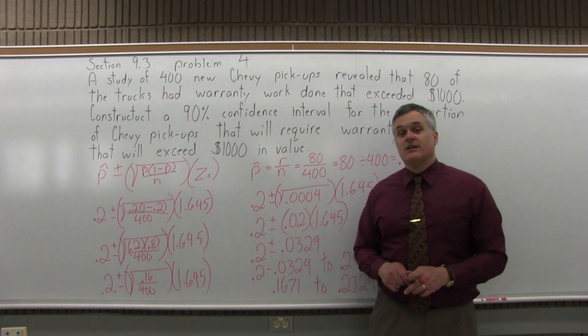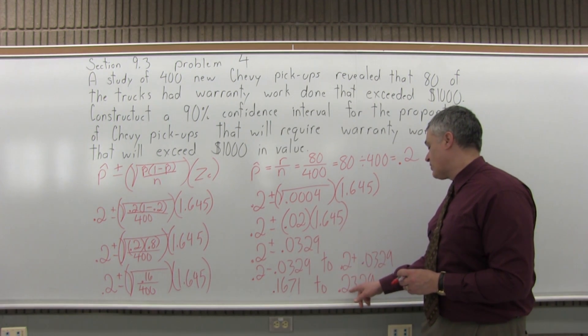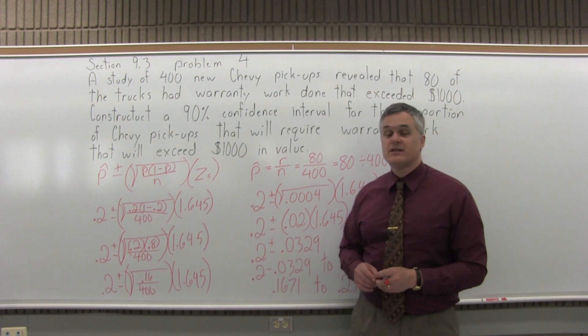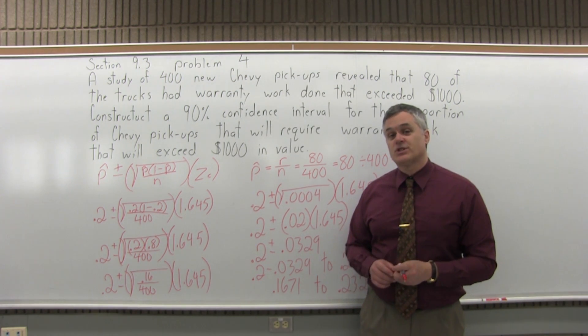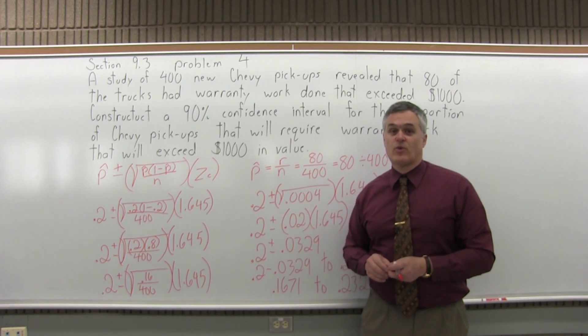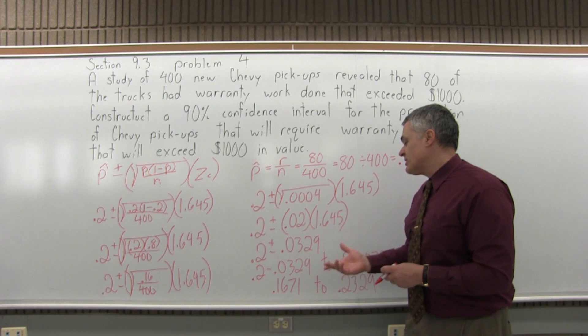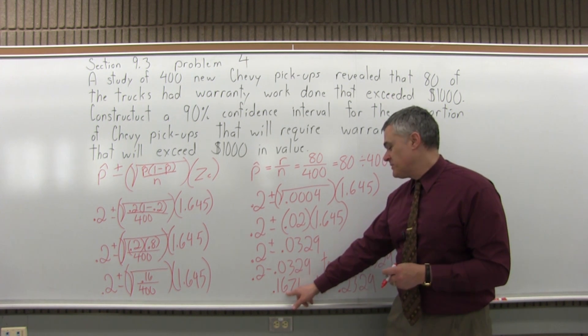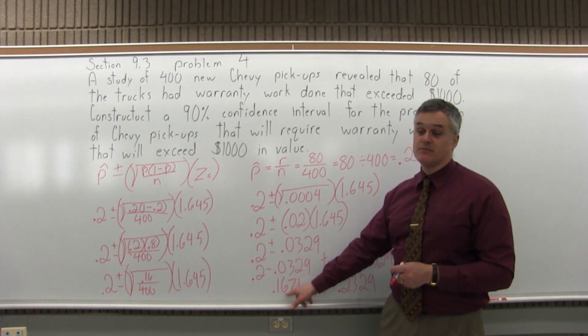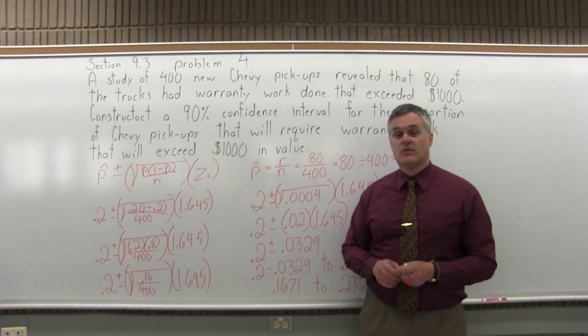So that I am now 90% confident that 0.1671 to 0.2329 is an interval that contains the true proportion of new Chevy pickups that would require some type of warranty work, $1,000 or more. So within round off, you're maybe, say, 16.75% almost to maybe about 23.75% probability.